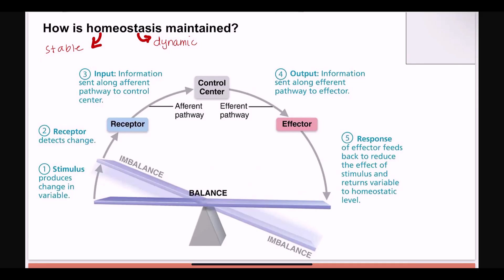Homeostasis is one of those things we come back to all the time, especially in this class when we talk about clinical applications and when things go wrong with our physiology. How do we correct errors of homeostasis? Typically this is corrected in five steps. If you can get really good at these five steps, you can apply this to nearly every homeostatic imbalance we'll talk about for the rest of the semester. The first step is a stimulus — just the change that throws off homeostasis. So if blood pressure gets higher or lower, that would be a stimulus.